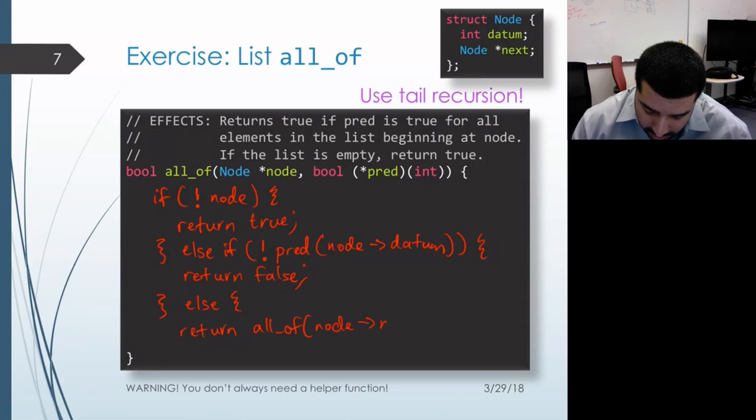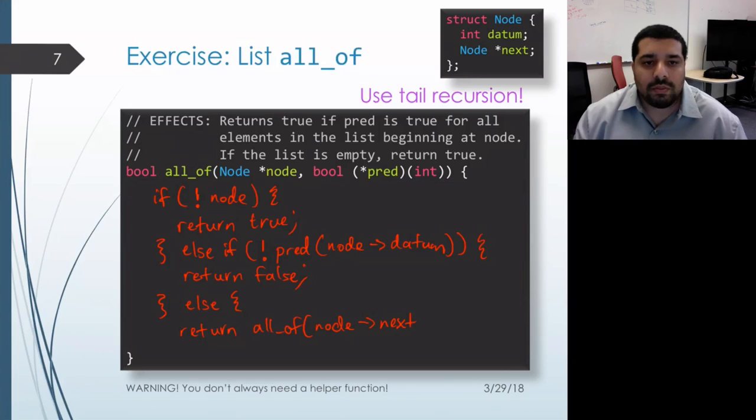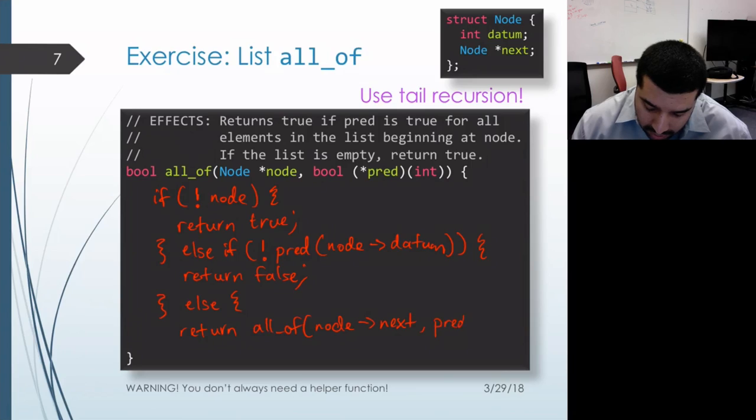In our implementation, the next pointer, the next member variable of the node, will be pointing at the rest of the list. And I will also need to pass the predicate along so that it can call that on the remaining items in the list.